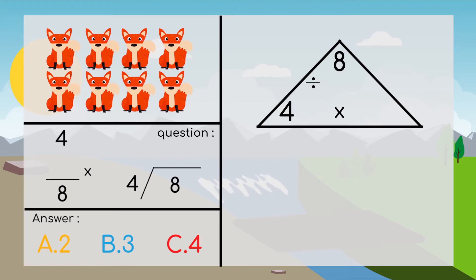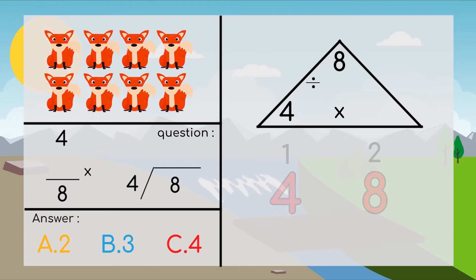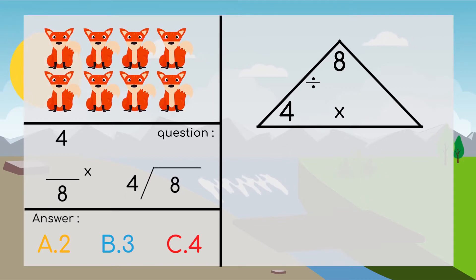To find out, we have to use skip count by 4 until we meet our total number. So 4, 8. That's 1, 2 - 2 times. So maybe the answer is 2.